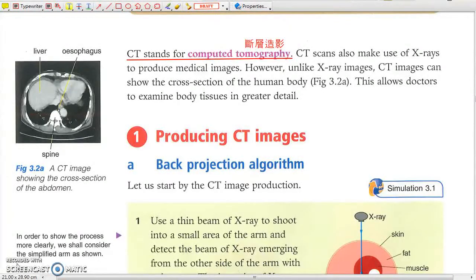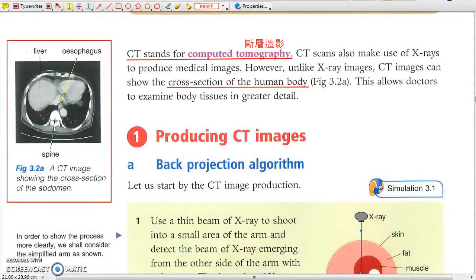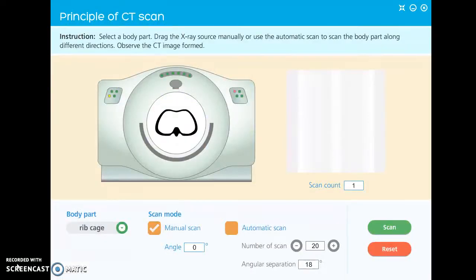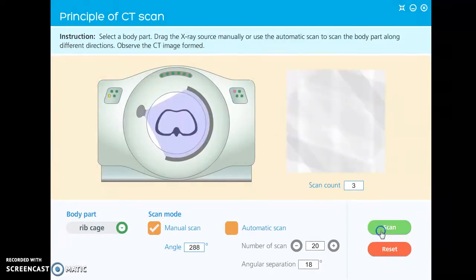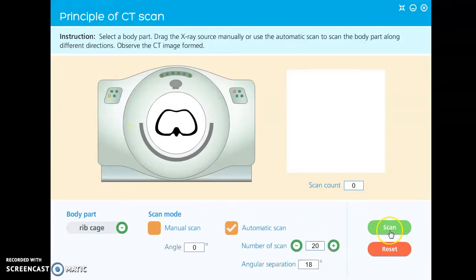CT scans produce cross-sections of the human body. It makes use of multiple X-ray scans from different directions to deduce 3D tissue structure by complex calculations.